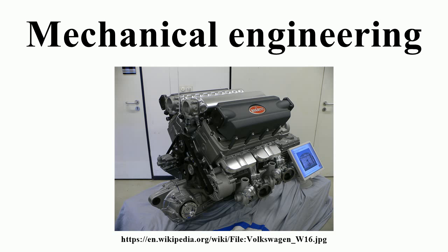During the early 19th century in England, Germany, and Scotland, the development of machine tools led mechanical engineering to develop as a separate field within engineering, providing manufacturing machines and the engines to power them. The first British Professional Society of Mechanical Engineers was formed in 1847 — the Institution of Mechanical Engineers — 30 years after the civil engineers formed the first such professional society, the Institution of Civil Engineers. On the European continent, Johann von Zimmermann founded the first factory for grinding machines in Chemnitz, Germany in 1848.